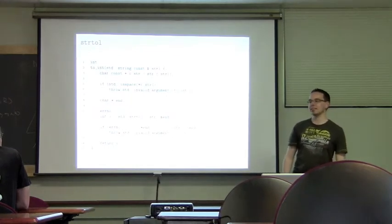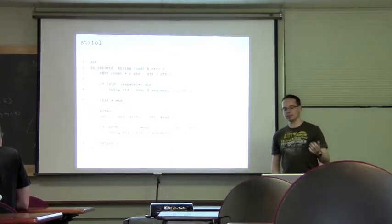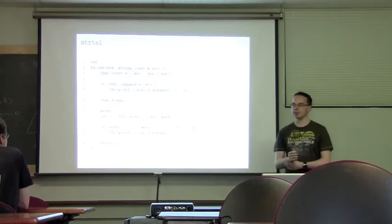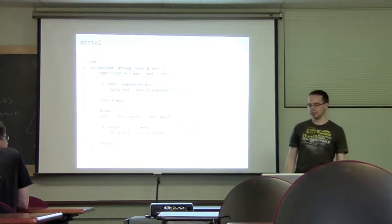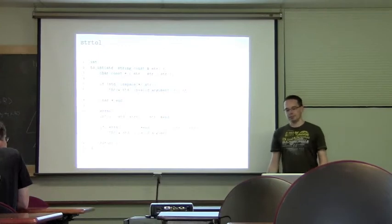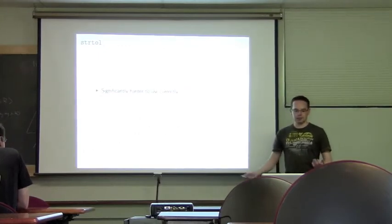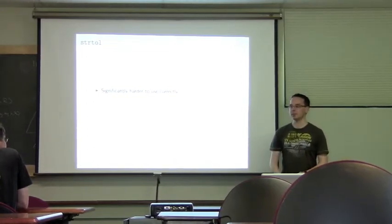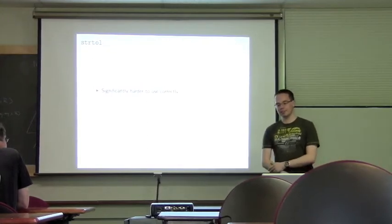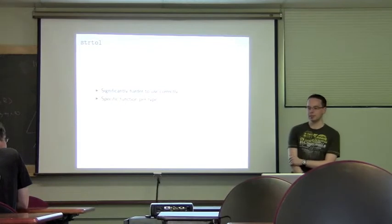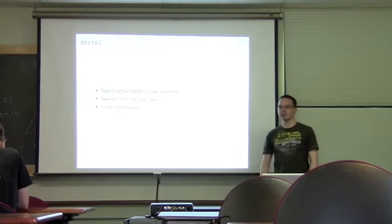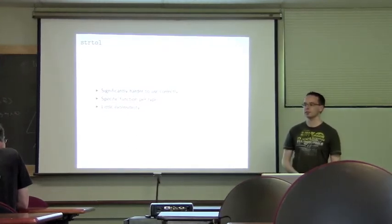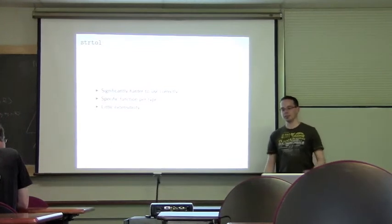The C functions like strtol are a little less easy to use. Similar to atoi, they skip spaces at the beginning. It's important to use — you have multiple functions: strtol, strtoul, strtoll — a whole list of them — and they offer little extensibility. You can specify a base, like converting hexadecimal, but that's where the problem starts.